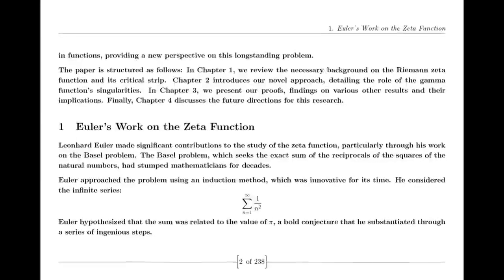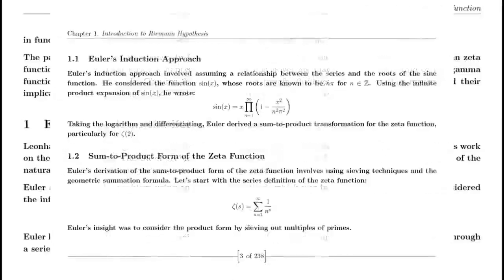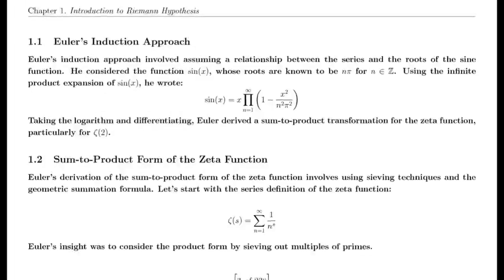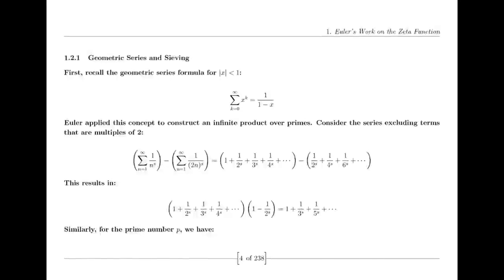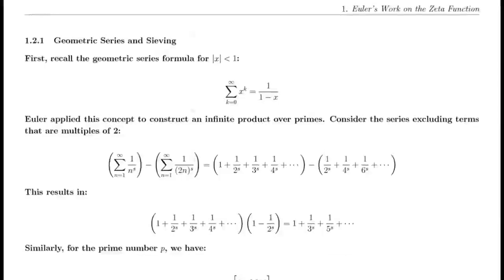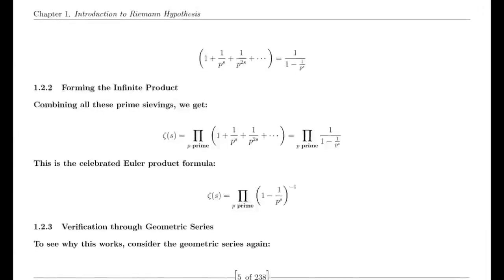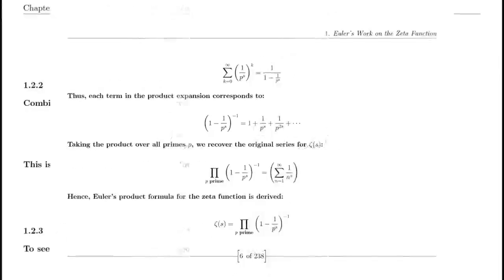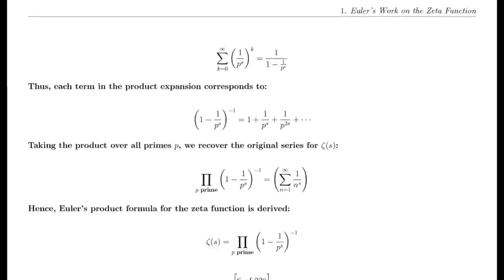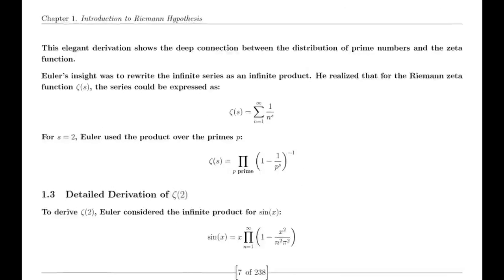Riemann also made use of the Jacobi theta function, which has significant applications in various areas of mathematics. The theta function's series representation and modular properties were instrumental in Riemann's derivation of the functional equation for the zeta function. This equation relates the zeta function's values at s and 1−s through a complex expression involving pi, the gamma function, and trigonometric functions, showcasing its symmetry and deep mathematical relationships.